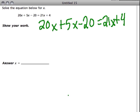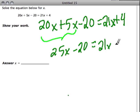Before I really get into solving this problem, we're going to combine like terms. 20x plus 5x is 25x. We still have minus 20, and that equals 21x plus 4.